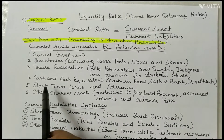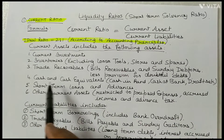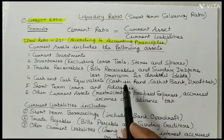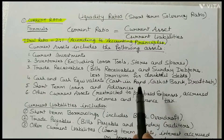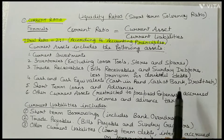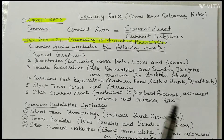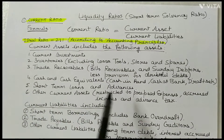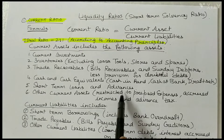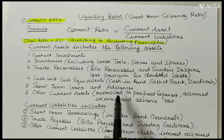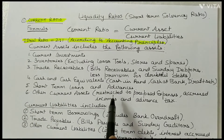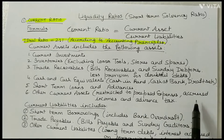Next is Cash and Cash Equivalents, which includes Cash in Hand, Cash at Bank, Drafts, Cheques, etc. And next is Short Term Loans and Advances, which means amounts the firm has given for a short period — these may include Prepaid Expenses, Accrued Income, and Advance Tax.